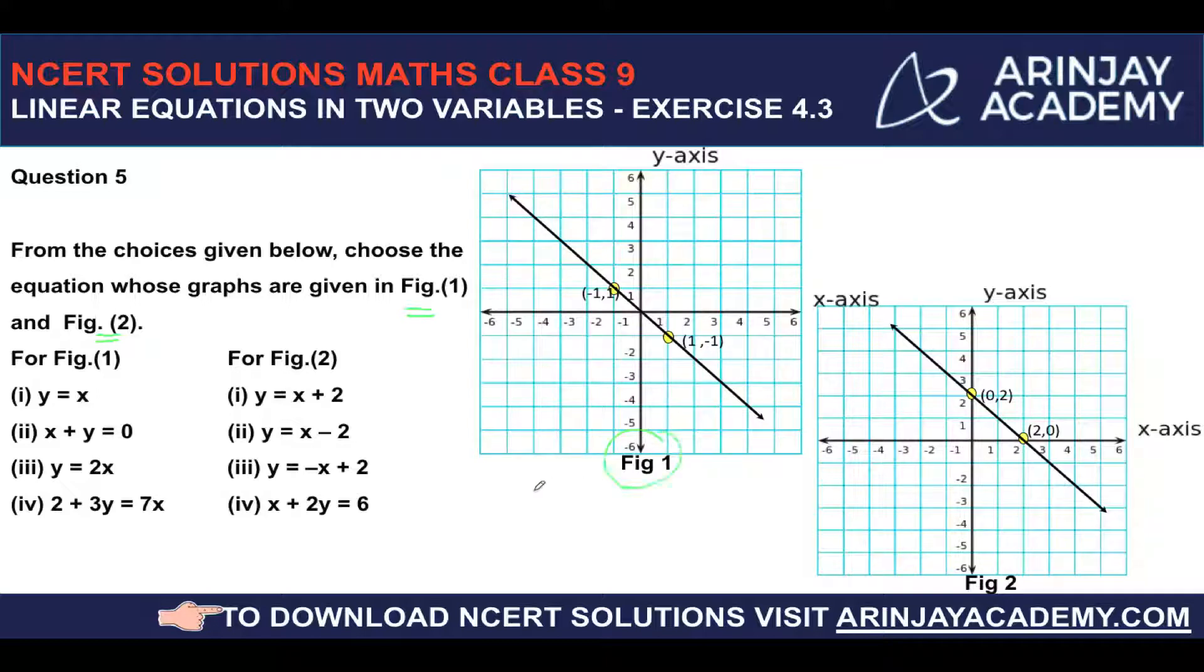Now in figure 1, you have (-1, 1) as the two points which are there. The other point is (1, -1).